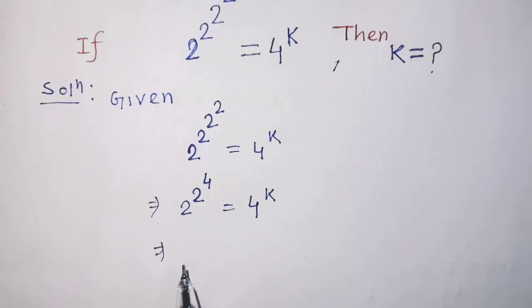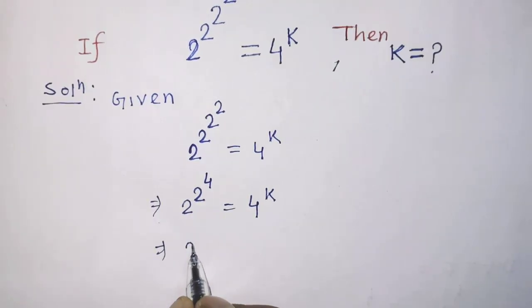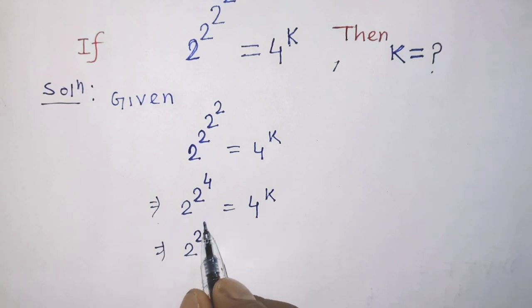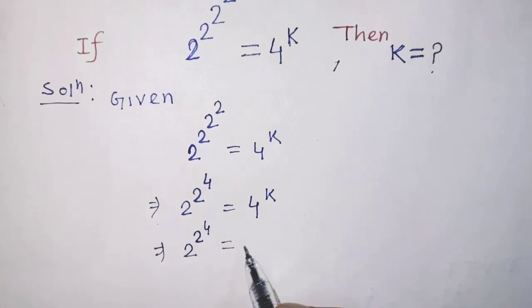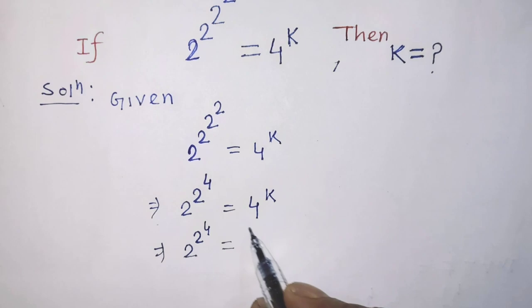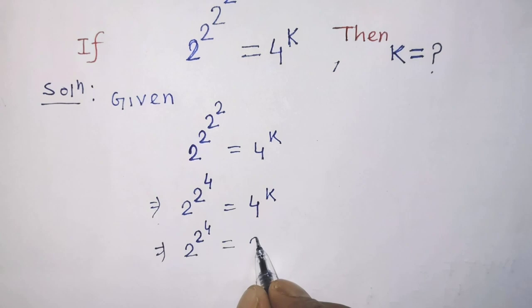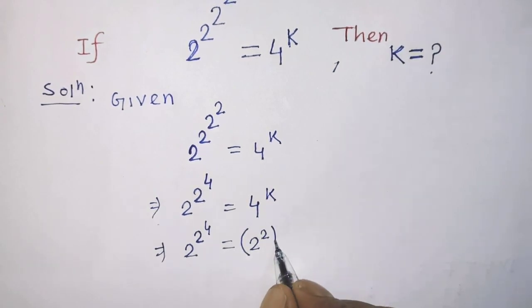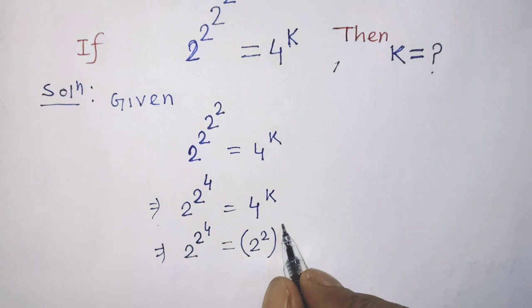After that, on the left hand side again have to write 2 power 2 power 4 is equal to on the right hand side in this exponential form, in the place of base 4, we can write in here 2 to the power 2 whole to the power k.